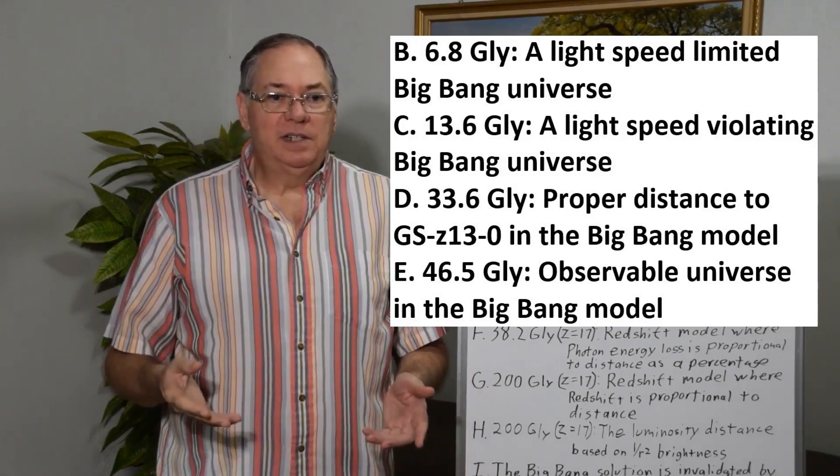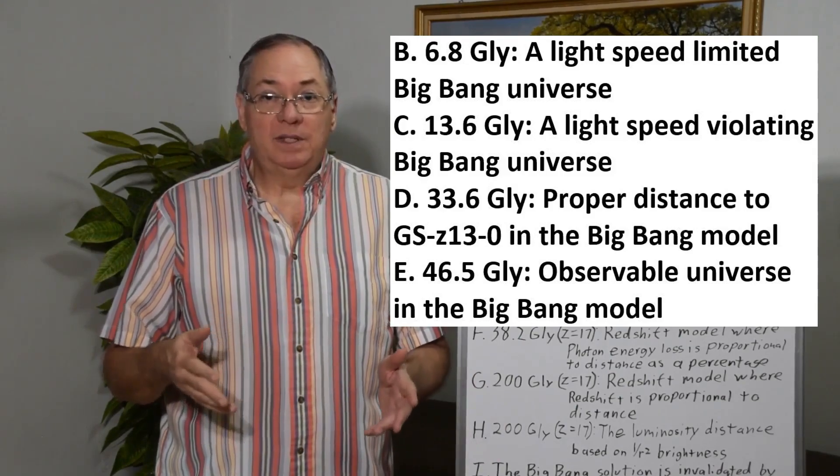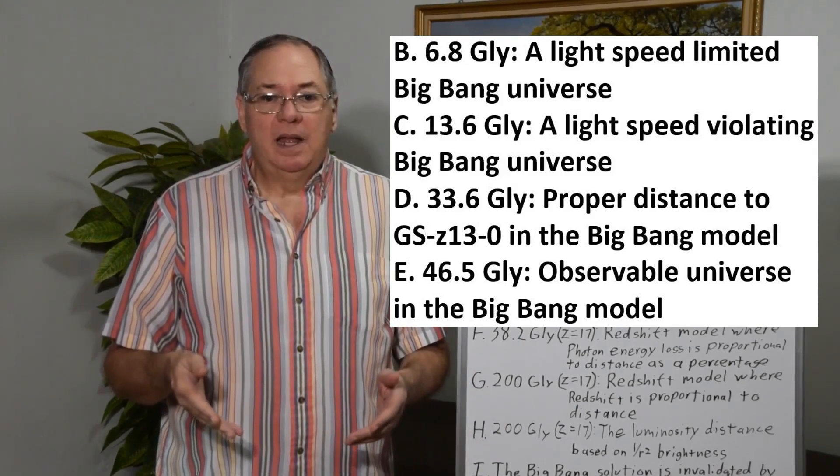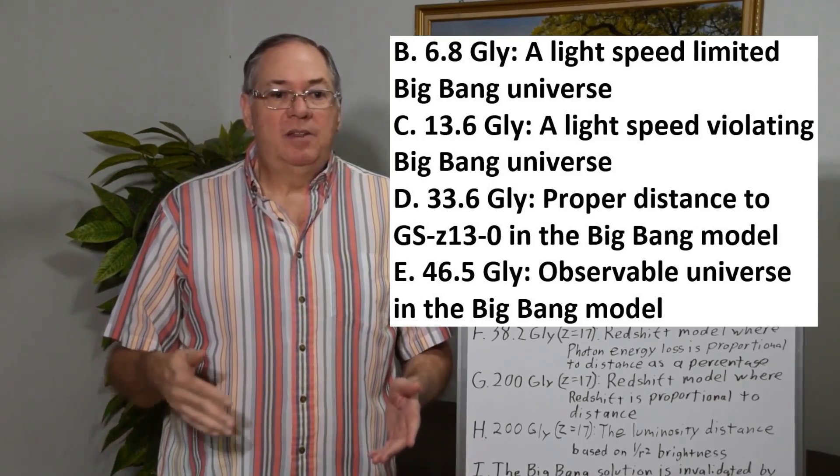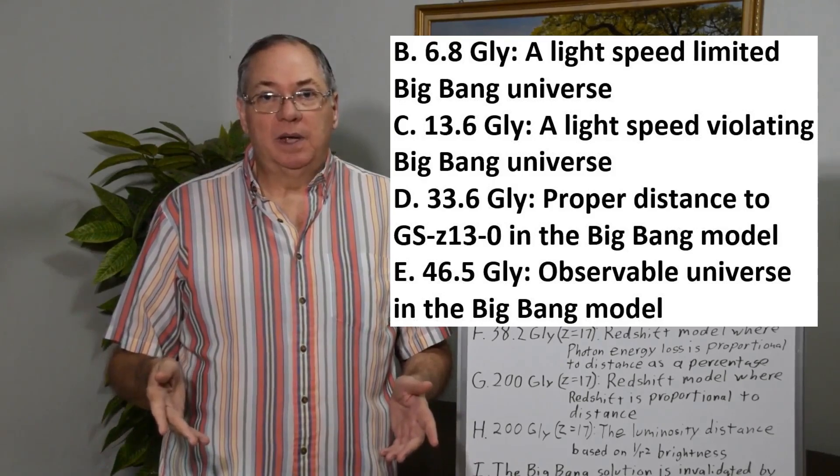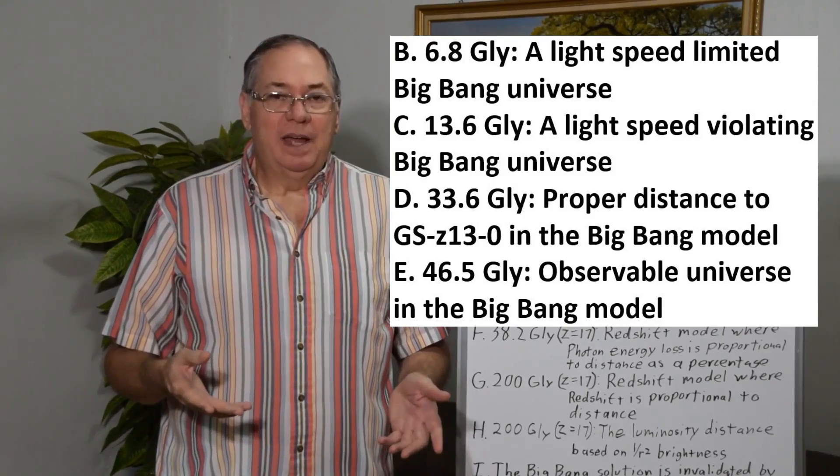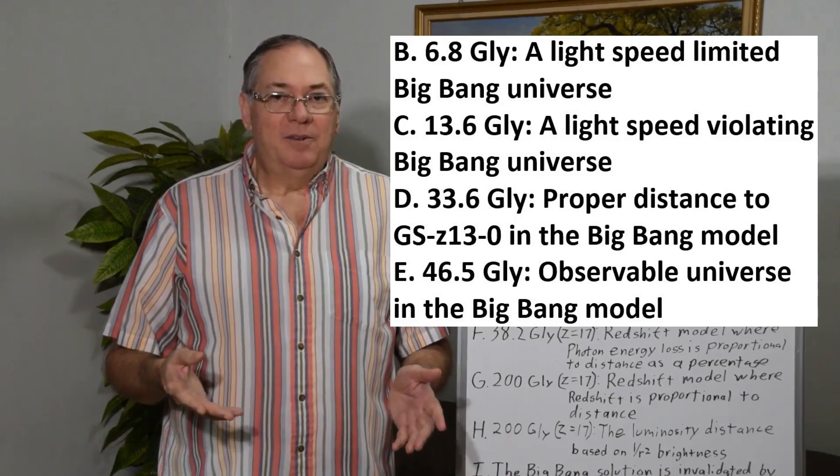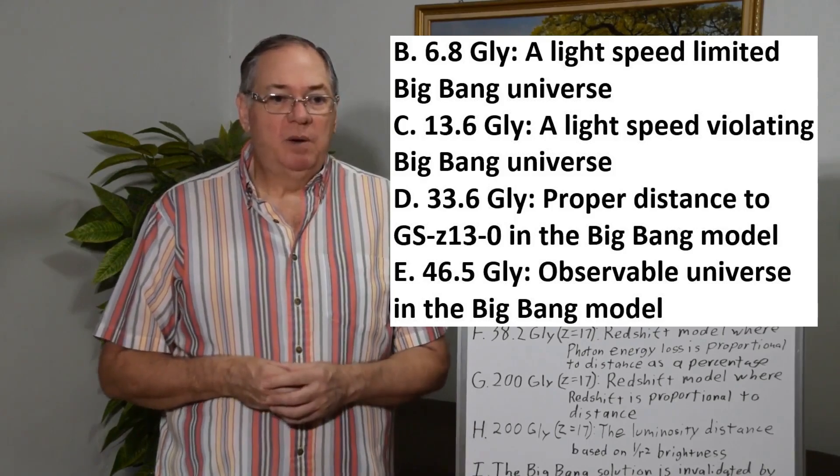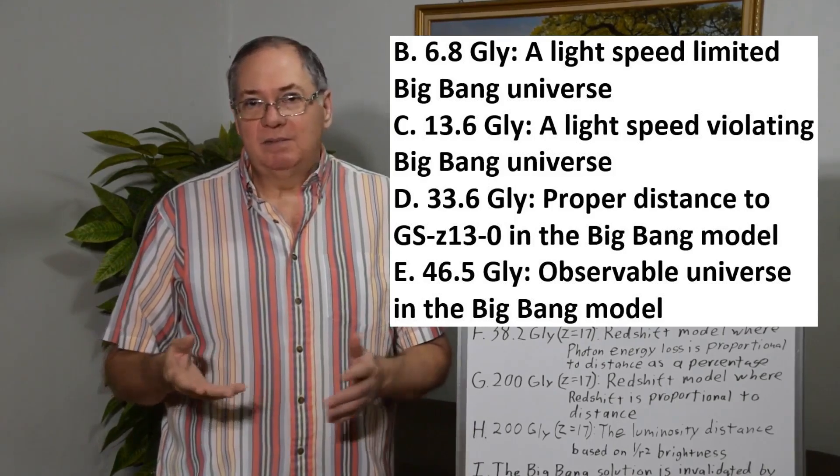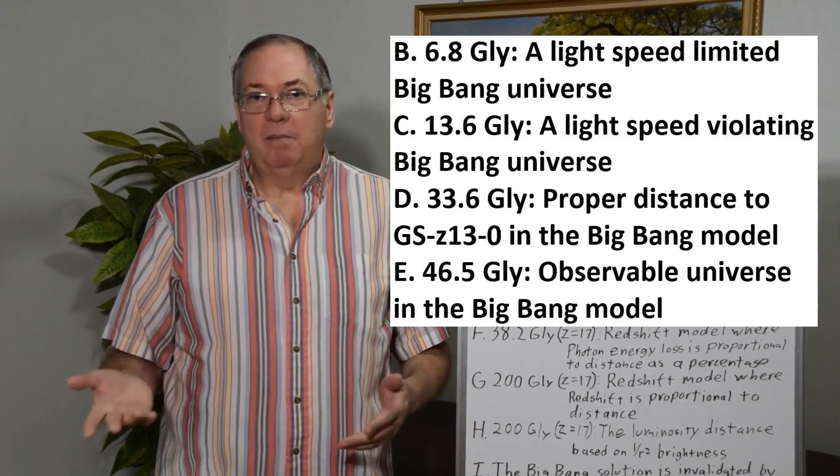So in the Big Bang approximation, the galaxies we currently see that are estimated to be 13.6 billion light years away, the actual proper distance where the galaxy is now would be 33.6 billion light years away. And the size of the observable Big Bang model is 46.5. So somewhere between 33.6 and 46 would be the observable limit under the Big Bang model.